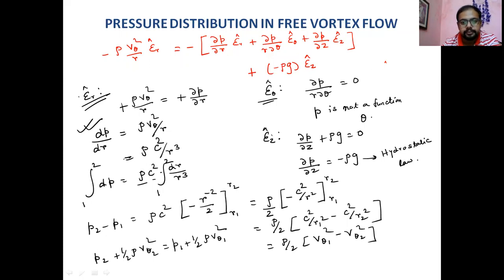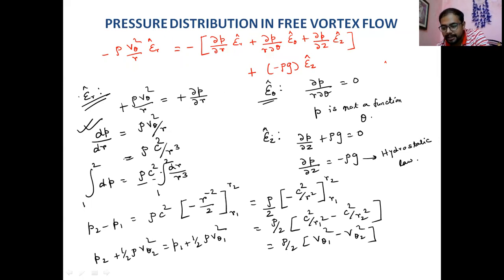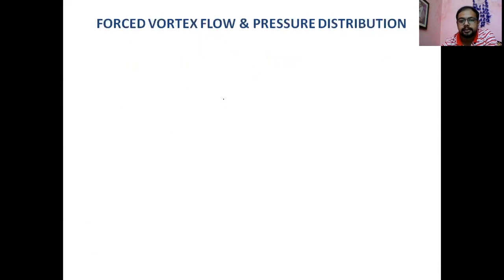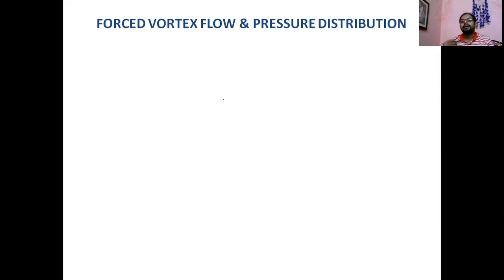We saw the pressure distribution in free vortex flow, but how the surface of the free vortex flow looks like and what is the velocity at the center — we are not discussing that yet. In free vortex flow, v_theta equals c/r, which means if r equals zero, v_theta is infinite. We will take this up later when we combine free and forced vortex flow.